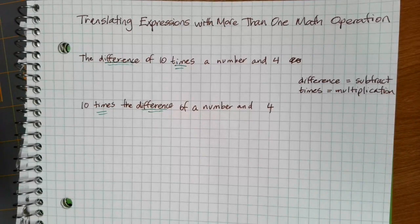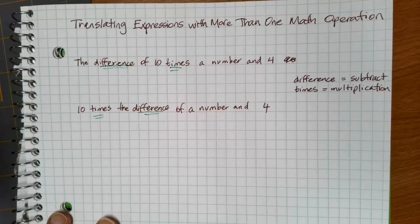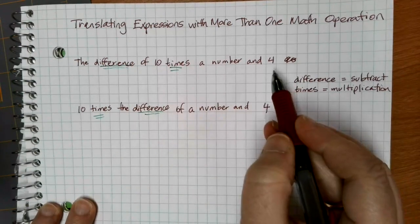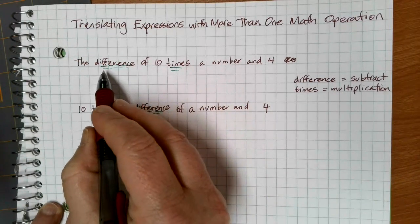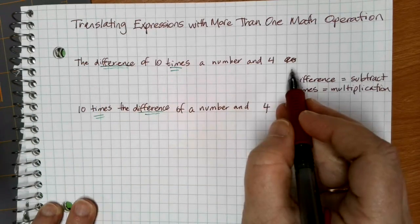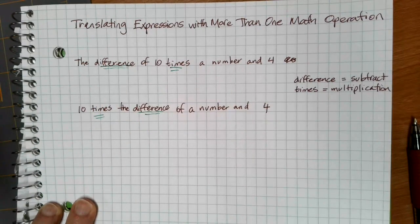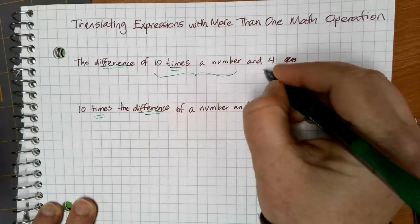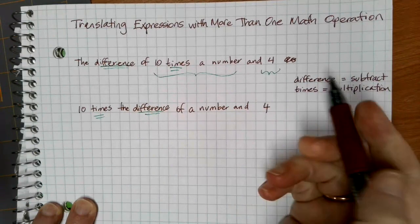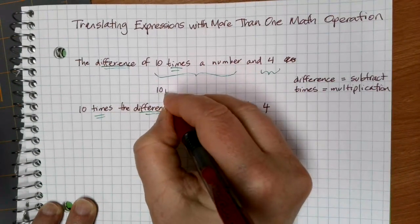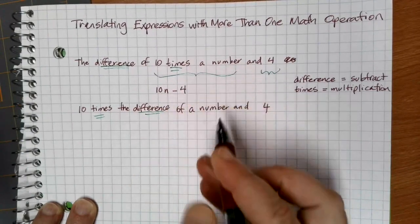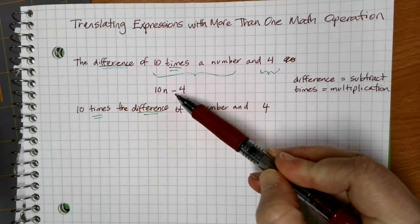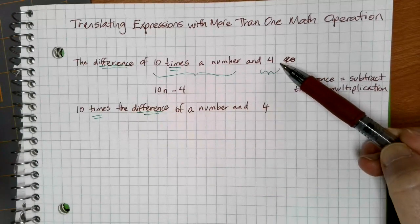As we read this, let's determine the order that things need to be done, and see that these actually relate to different expressions. For the first problem, it tells us to find the difference of 10 times a number and 4. The difference indicates the answer to a subtraction problem, so everything that follows talks about that subtraction. We have 10 times a number, and then we subtract 4. Because of order of operations, 10 times a number — this multiplication is done first — and then we subtract 4 from that.